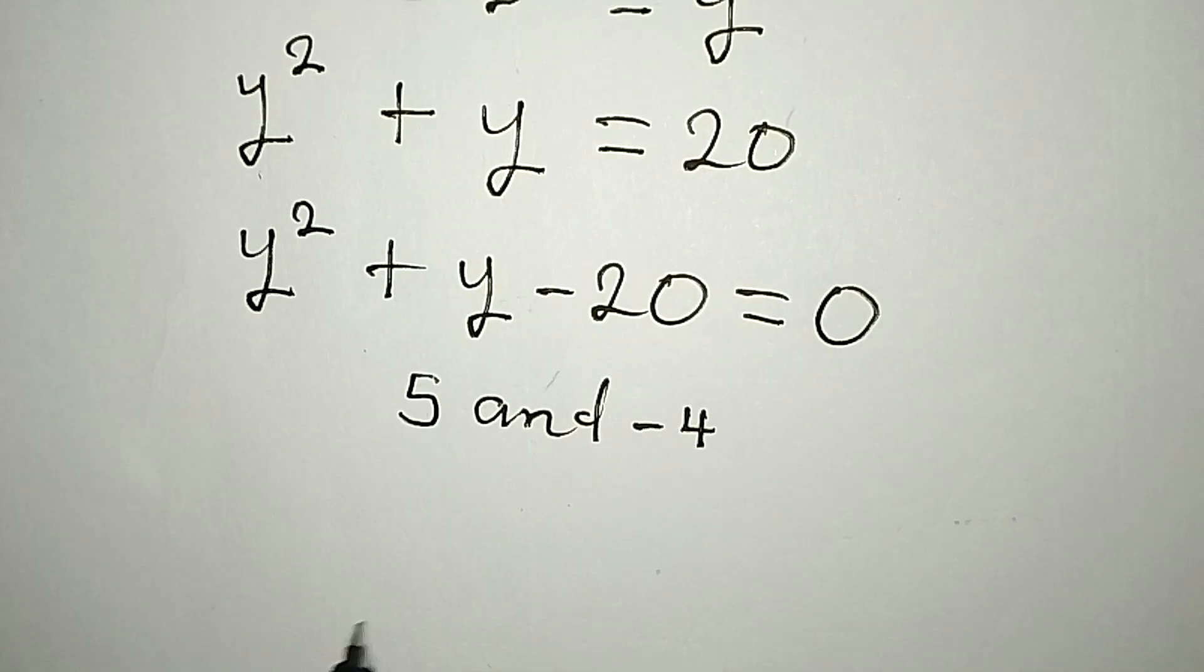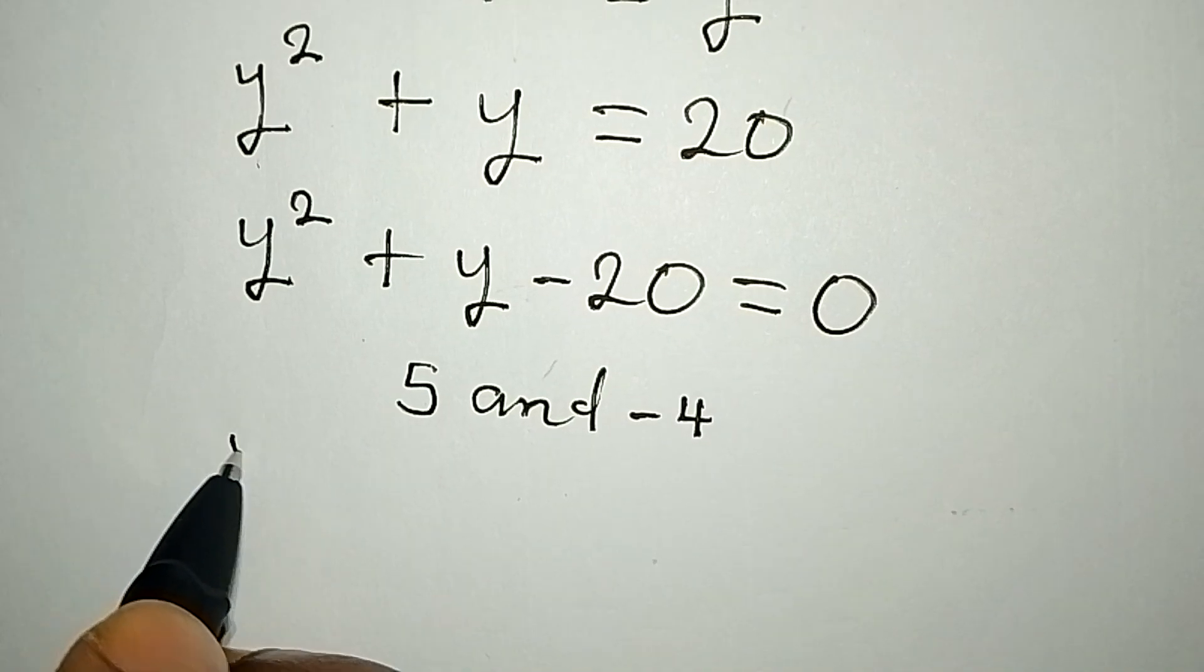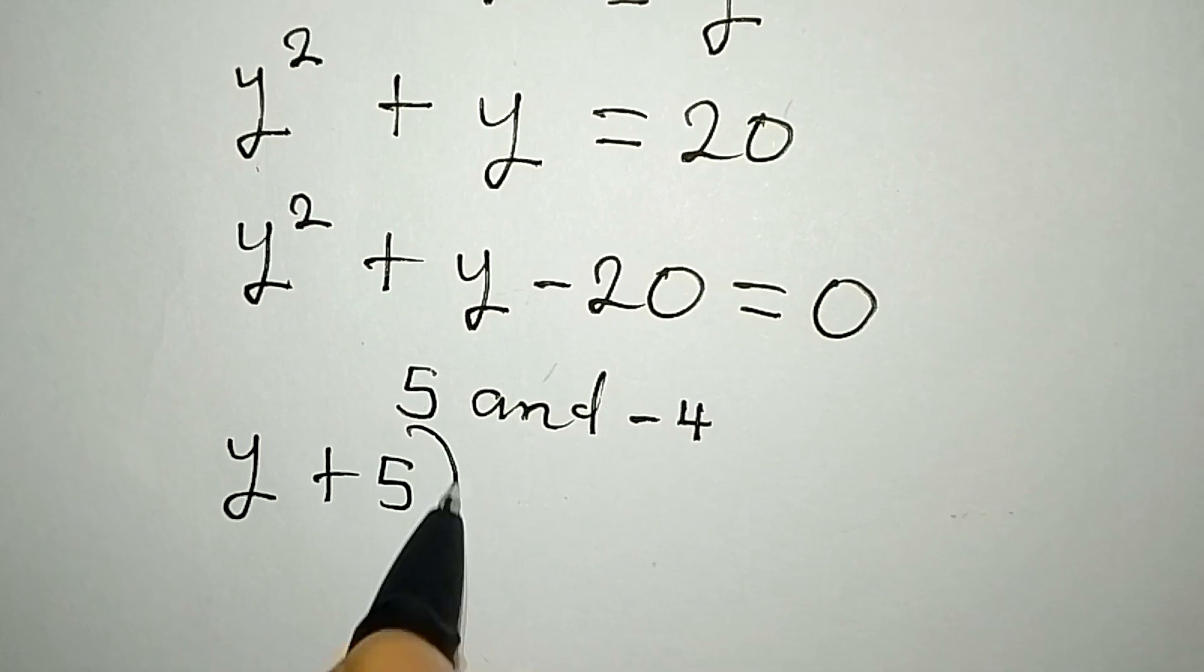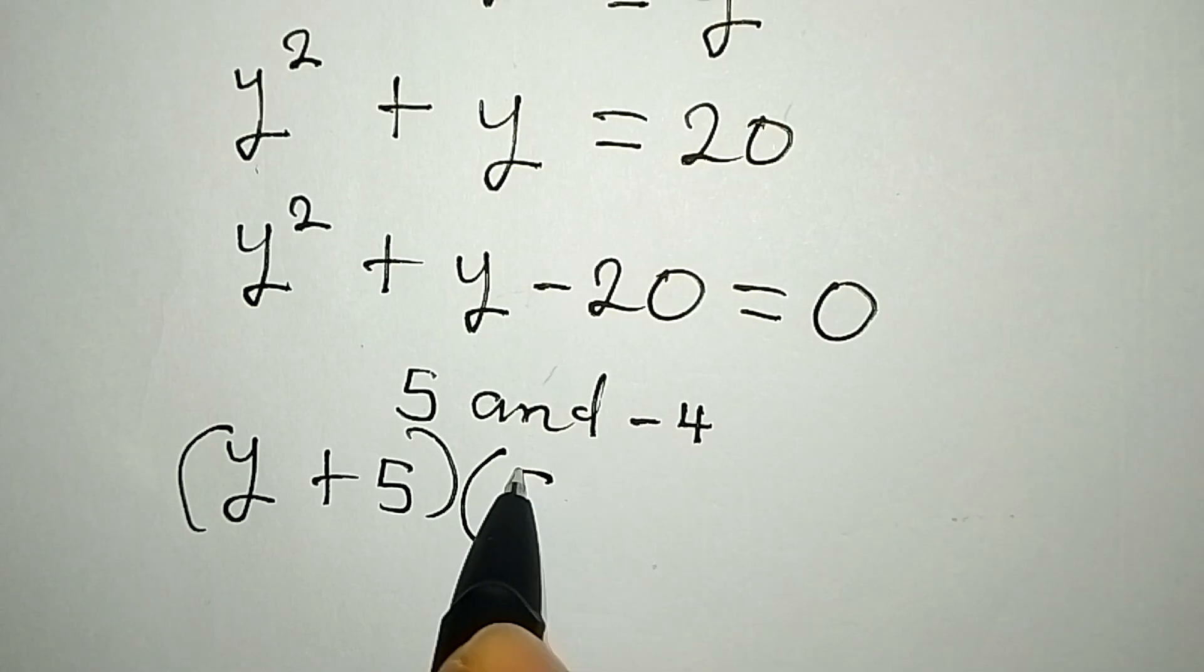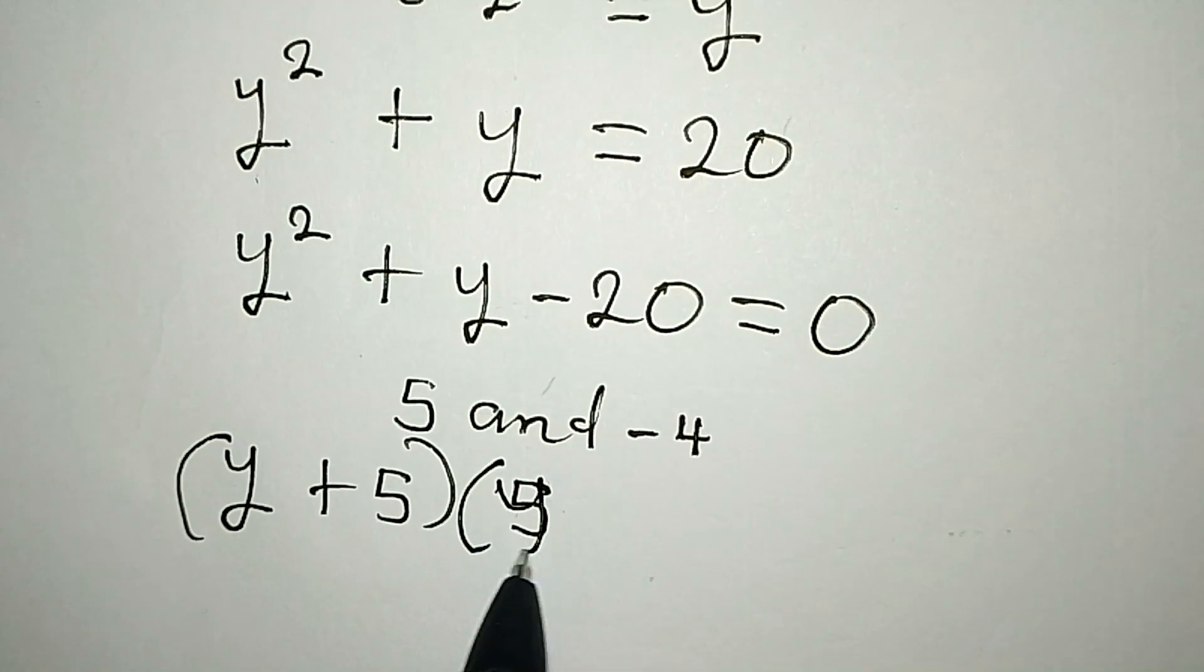So this means that the factors will be y plus 5, and then the second factor will be y minus 4.